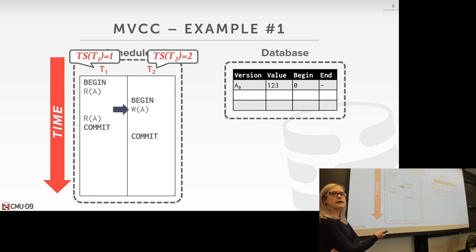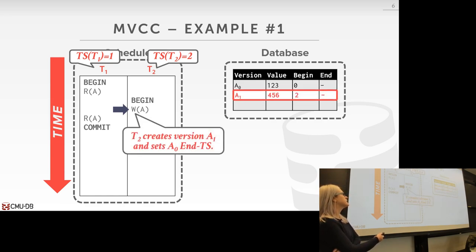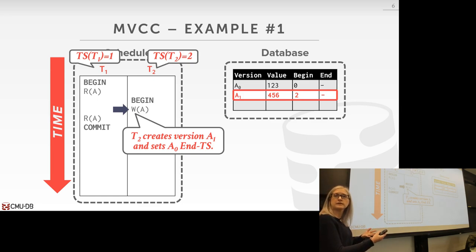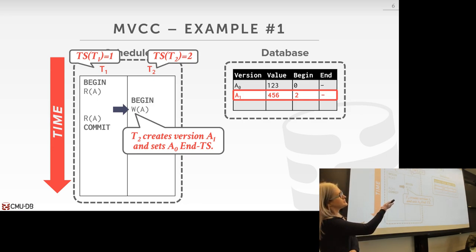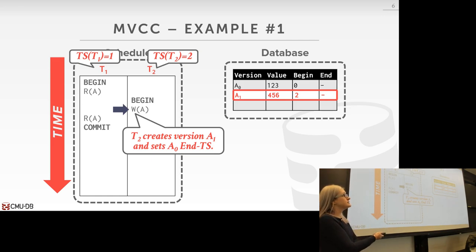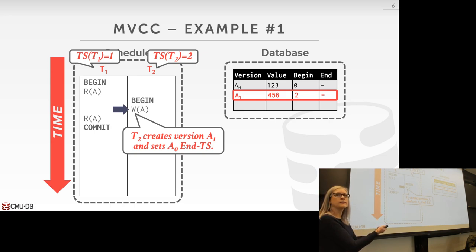Now transaction T2 arrives with timestamp 2, and it wants to write A. We create a completely new version A1 by incrementing the version counter. The beginning timestamp is set to T2's timestamp of 2, end timestamp is set to infinity. We also update the end timestamp of version A0 to be 2, the timestamp of T2.